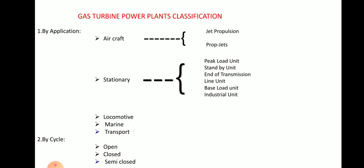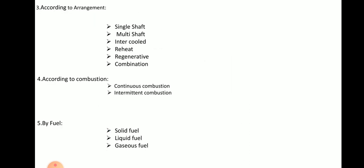Other examples include locomotive, marine transport, and recycle applications. These are open, closed, and semi-closed cycles. According to arrangement, they are single shaft, multi shaft, intercooled, reheat, regenerative, and combination types. According to combustion, they are continuous combustion or intermittent combustion. On the basis of fuel, they are solid fuel, liquid fuel, and gaseous fuel.